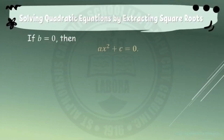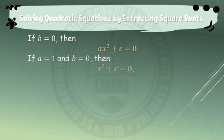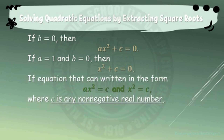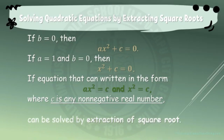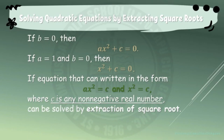Now, in a quadratic equation, if b equals 0, then the quadratic equation is in the form of ax squared plus c equals 0. If a equals 1 and b equals 0, then it is in the form of x squared plus c equals 0. If the equation can be written in the form of ax squared equals c, or x squared equals c, where c is any non-negative real number, then it can be solved by extraction of square root.